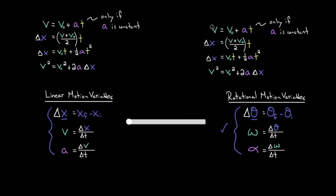So instead of v, the final velocity, we have omega, the final angular velocity. Instead of v-initial, the initial velocity, we have the initial angular velocity. Instead of the acceleration, we have the angular acceleration. And time is just time — there's no such thing as angular time or linear time. As far as we know, there's only one time, t, and it works in either equation.